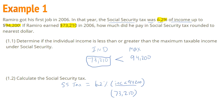We're going to convert 6.2% to a decimal. Move the decimal in once, move it in twice — that gives us 0.062. So 0.062 times $73,210 should equal my social security tax.